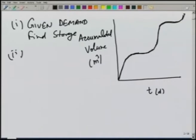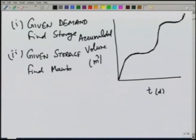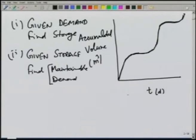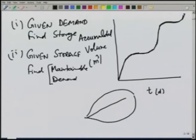For the second problem, if our storage capacity is limited or fixed from other considerations, we ask what demand can be maintained. When we say demand, it includes whatever water we have to release downstream of that point. The hydrograph at point A gives us the amount of water coming from upstream. The demand includes whatever demands exist in the nearby area as well as the amount of water we have to release downstream. We have already seen that the maximum demand which can be maintained would be the average annual yield of the stream.